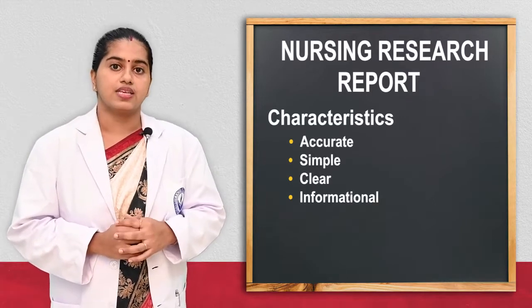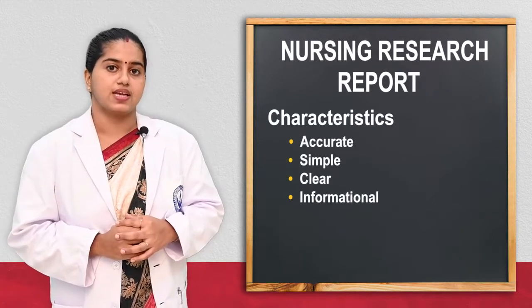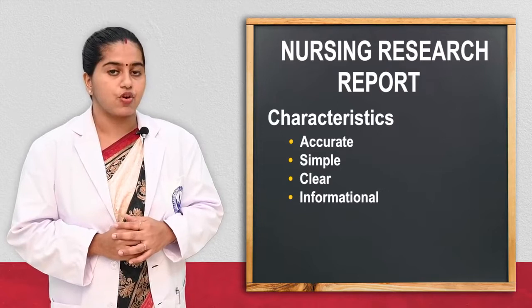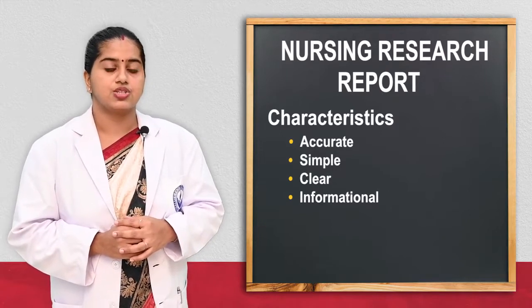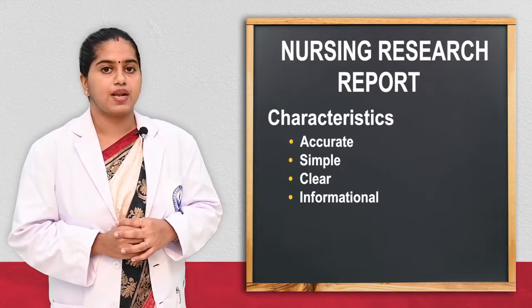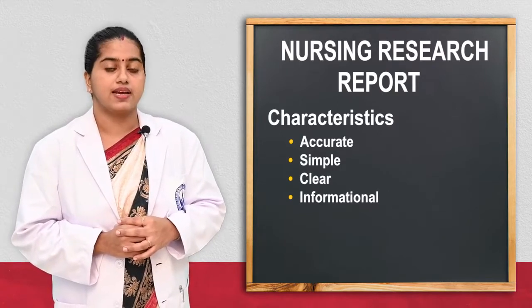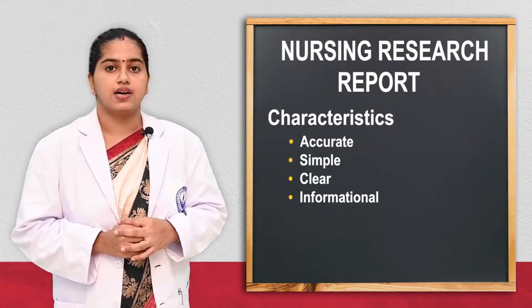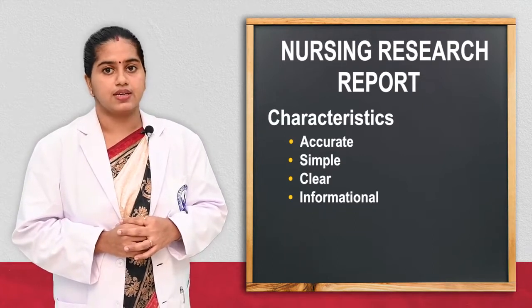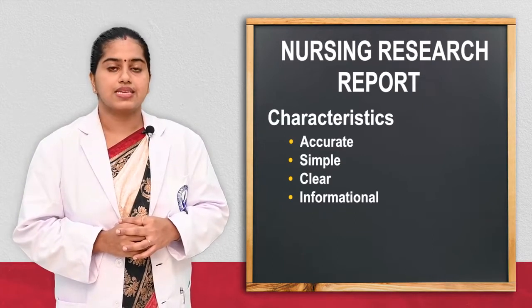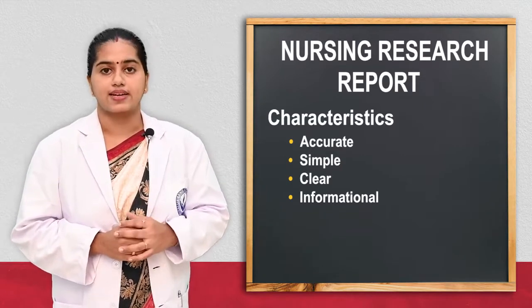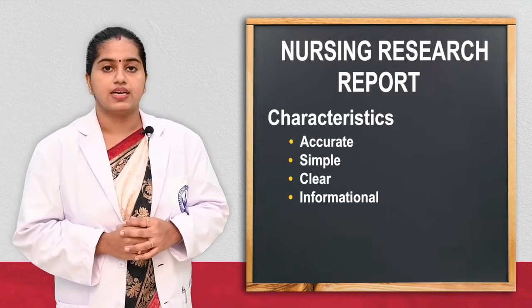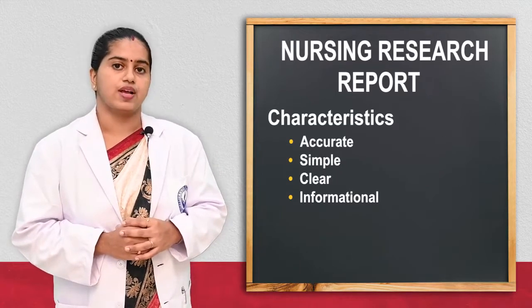And last one is accuracy. Accurate information has to be given and it should be simple, clear, and knowledgeable for the readers. These are the important characteristics of the research report.